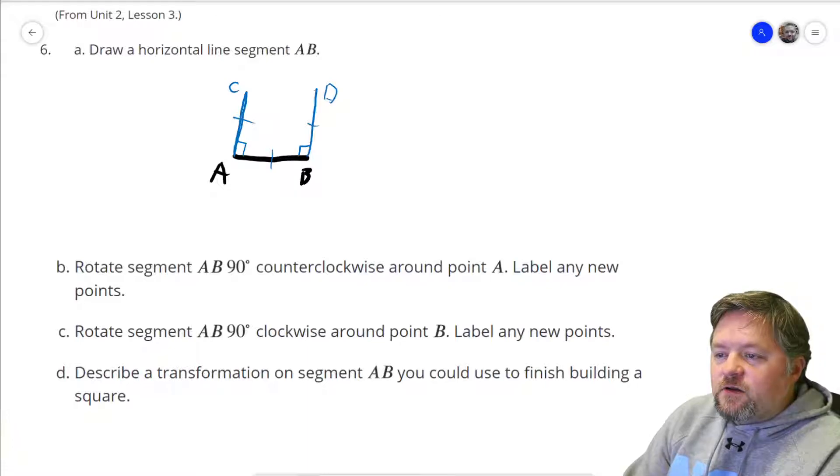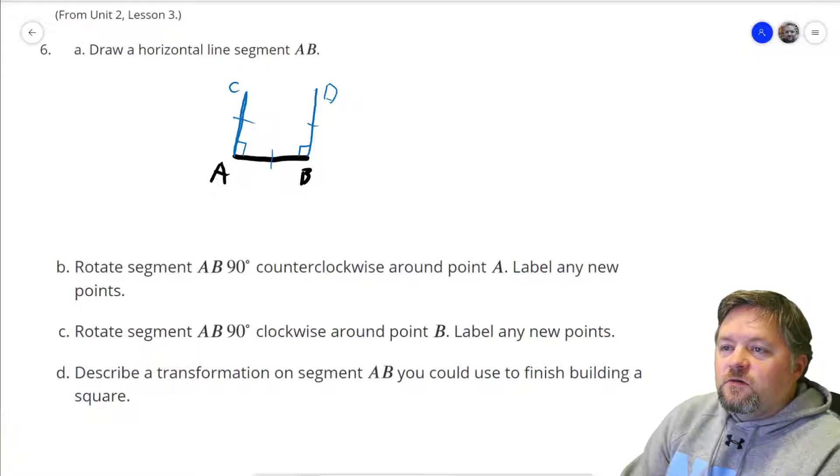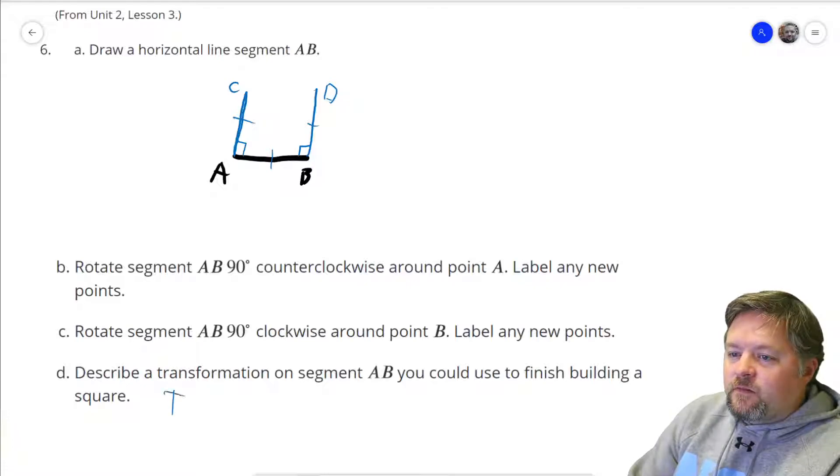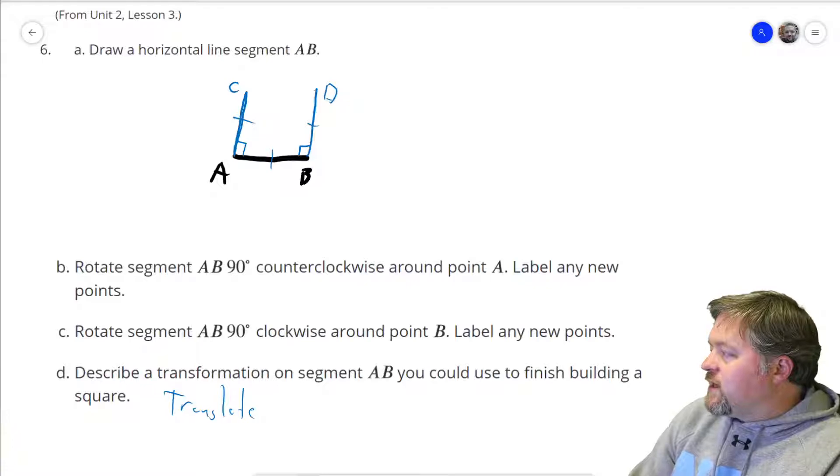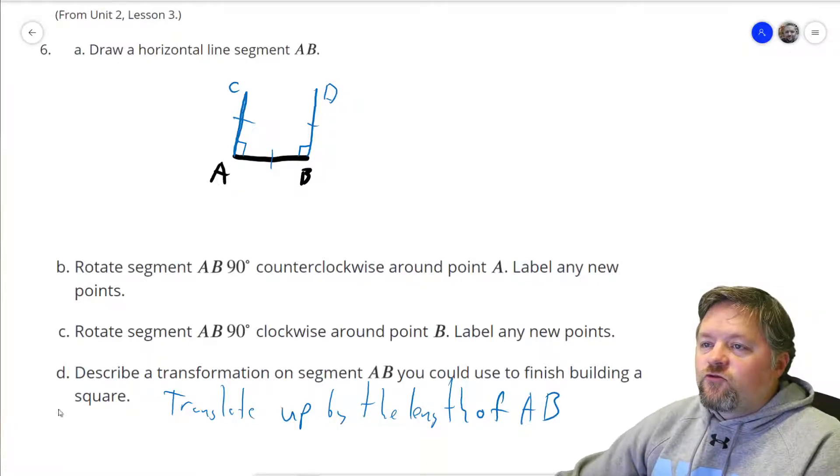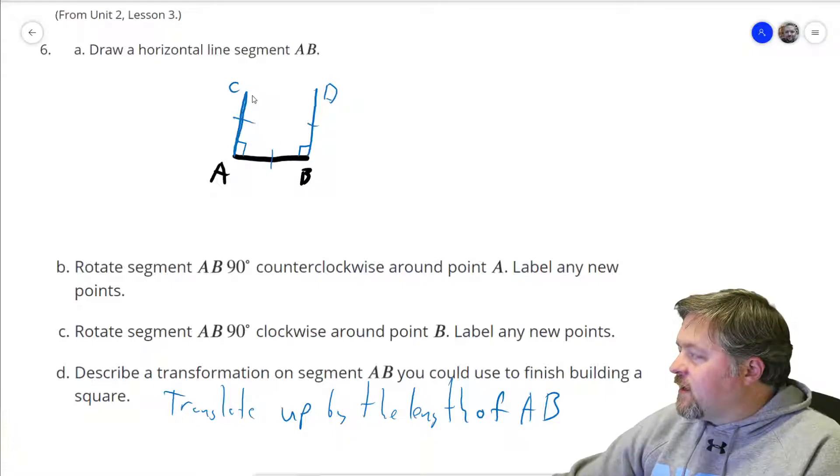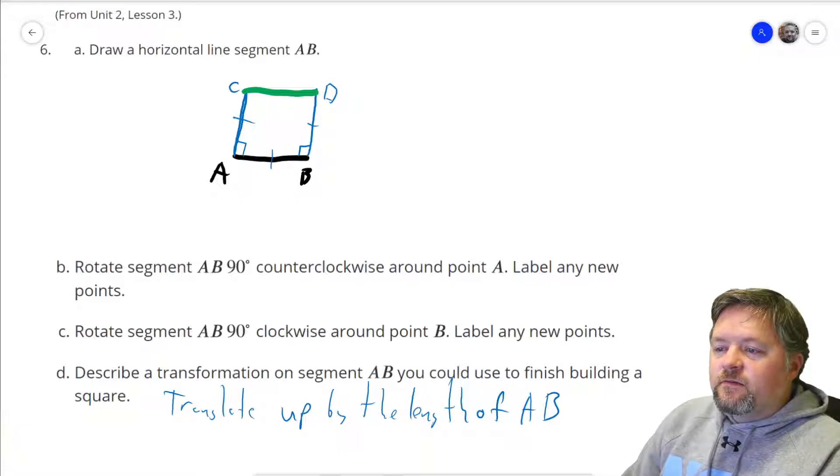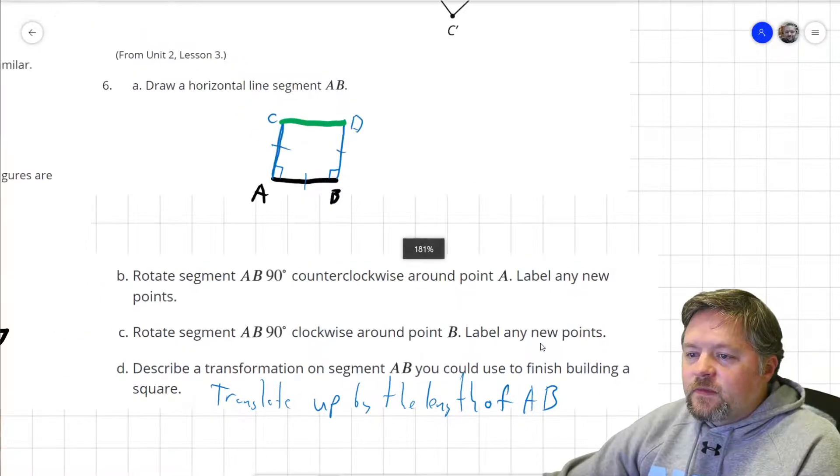Describe a transformation on segment AB that you could use to finish building a square. So it says transformation on segment AB, which means we can't just rotate AC. We have to do something to AB. So what I'm going to say is translate AB up by the length of AB. And what will that give us? Top of our square. That's the last problem on this one.